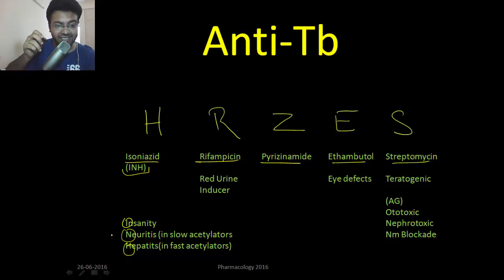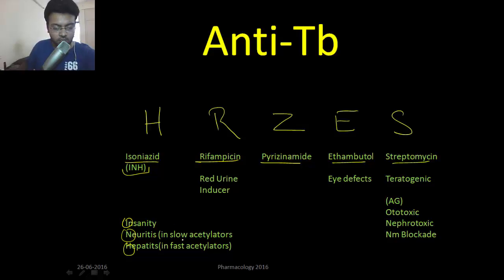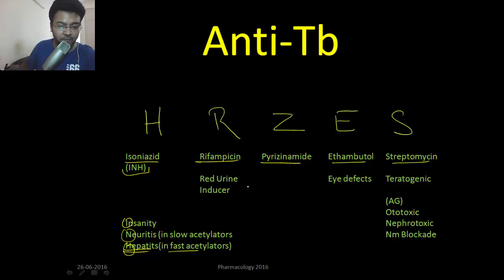We talked about isoniazid in phase 2 biotransformation — acetylation. The drugs excreted by acetylation were SHIP: sulfonamide, hydralazine, isoniazid, and procainamide. In slow acetylators, neuritis is more common, due to pyridoxine deficiency. In fast acetylators, hepatitis is more common.